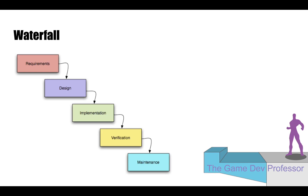To start off with waterfall: waterfall is a design theory that comes out of GE manufacturing. When you want to create a product — in this case a game — you write down all the requirements, you design it out, then you implement it, then you check it. It flows from one group of work to another. This is honestly how a lot of companies structure their contract projects, where there is a set of requirements set in stone from the beginning.